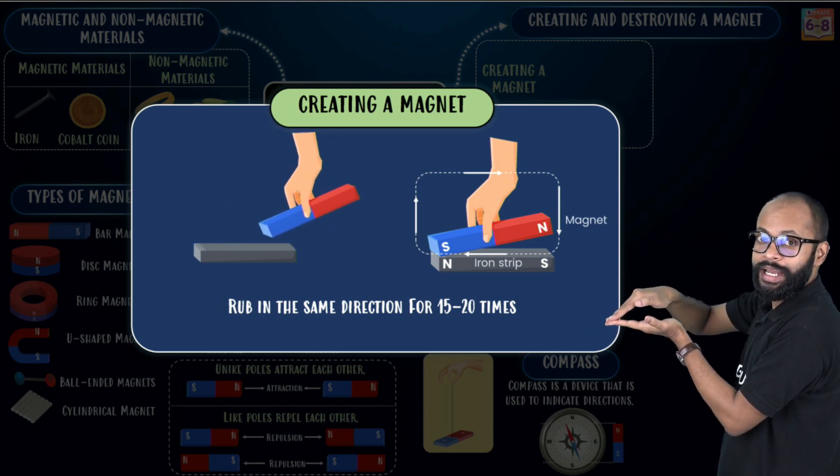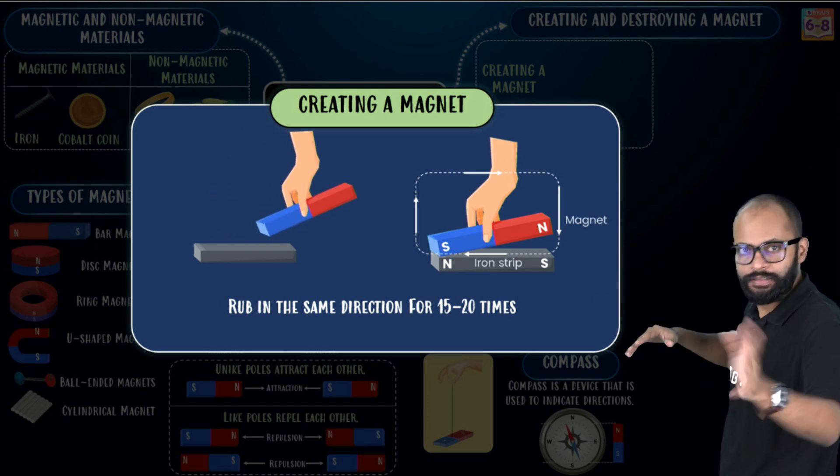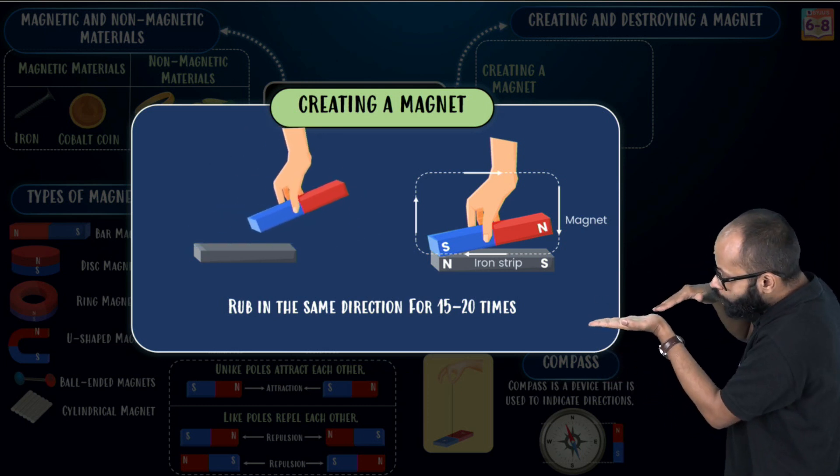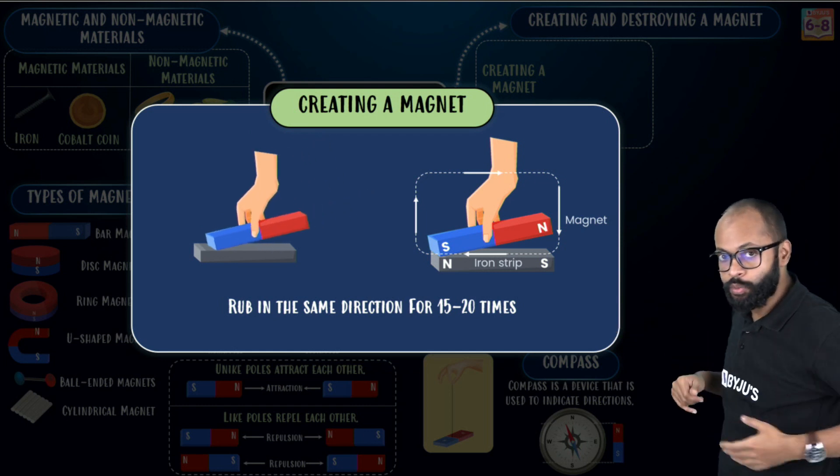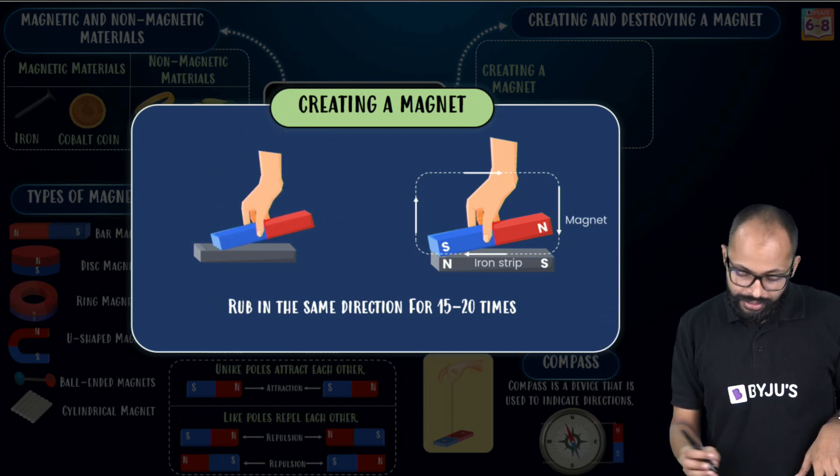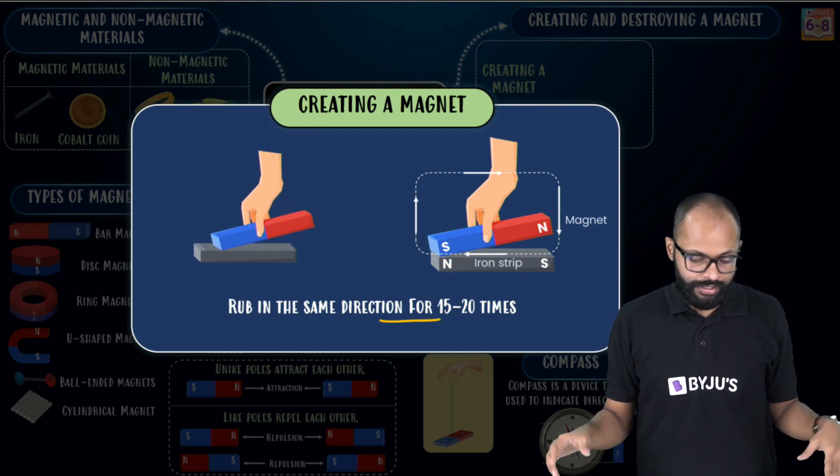Now notice. Two things are very important. You are rubbing from one side to another, then lifting, then rubbing again. You are not doing like this. No, no, no, no, no. Second, when you are rubbing, you do not lift in between. You take it from one end to another end.